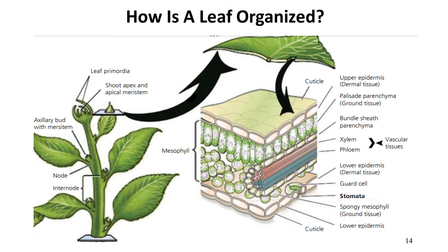In this part of our lecture we will discuss the anatomy of leaf. Anatomy is the study of the internal structure of an organ. As we know, leaf is an important photosynthetic organ of a plant. Like stem and root, leaves also have three types of tissue system: dermal, ground, and vascular.